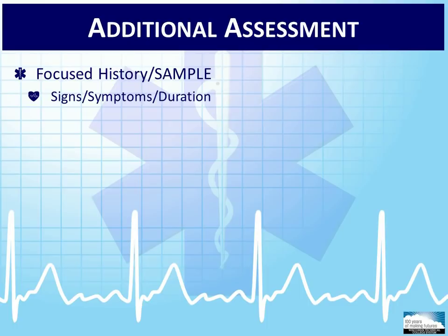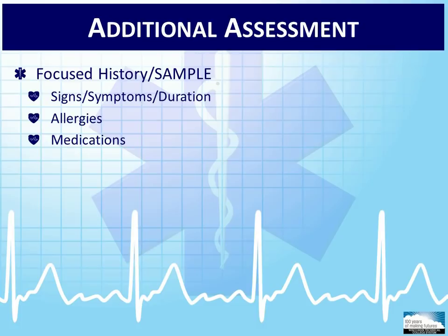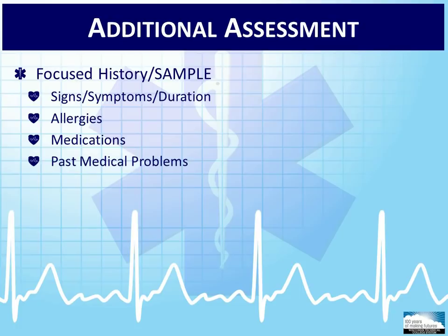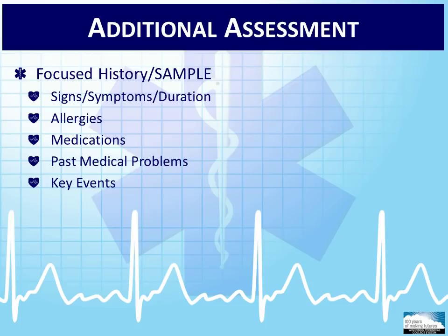The SAMPLE history will help the EMT determine the signs and symptoms from which the patient is suffering. Allergies to food, environmental factors, or medicines are important to determine. Ask whether the patient is currently taking any prescribed medications. If you are unfamiliar with a particular medication, look it up or ask why the patient is taking it. Ask about over-the-counter and prescribed medications as well as herbal supplements. The older your pediatric patient, the more important it is to ask about illicit drug and alcohol use. It may be necessary to separate the pediatric patient from his or her parents to increase the likelihood of an honest answer. The patient's past medical history may yield needed clues, and investigate any past pertinent medical problems with follow-up questions.